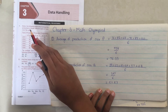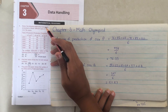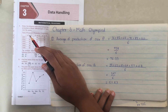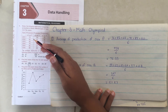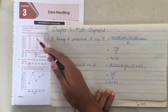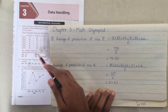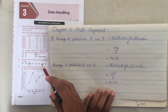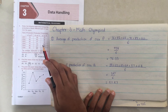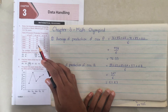The first question says: study the following table which shows the production of three different types of cars over the years. The table shows the production of three different cars over six years. We have to find the average production of which of the following types of cars was maximum, so we need to find the average production of each and every car.